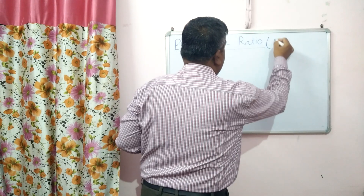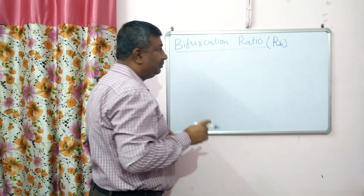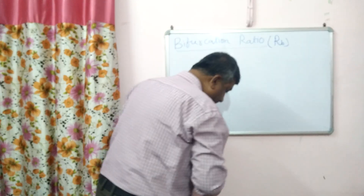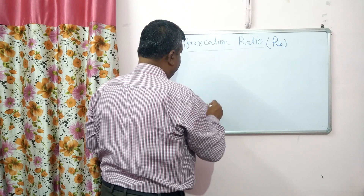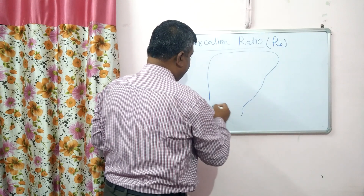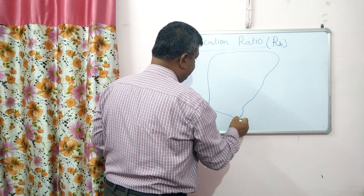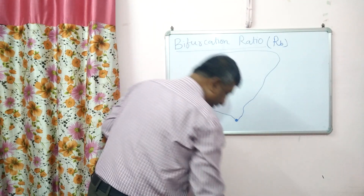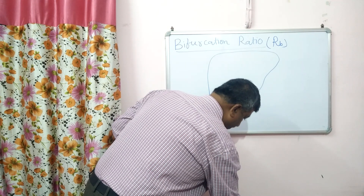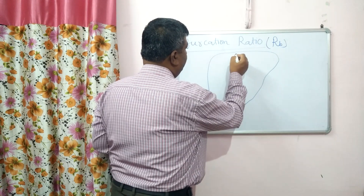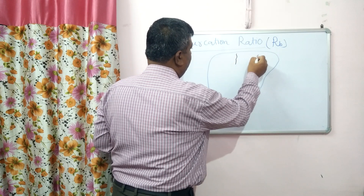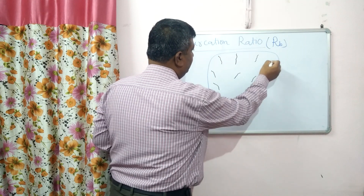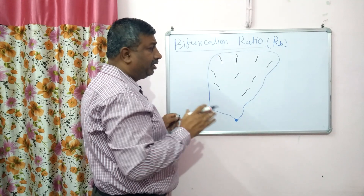The symbol is Rb. To understand what Rb is, suppose there is a large watershed with an outlet. A number of small streams start after rainfall — these streams are actually first order streams.